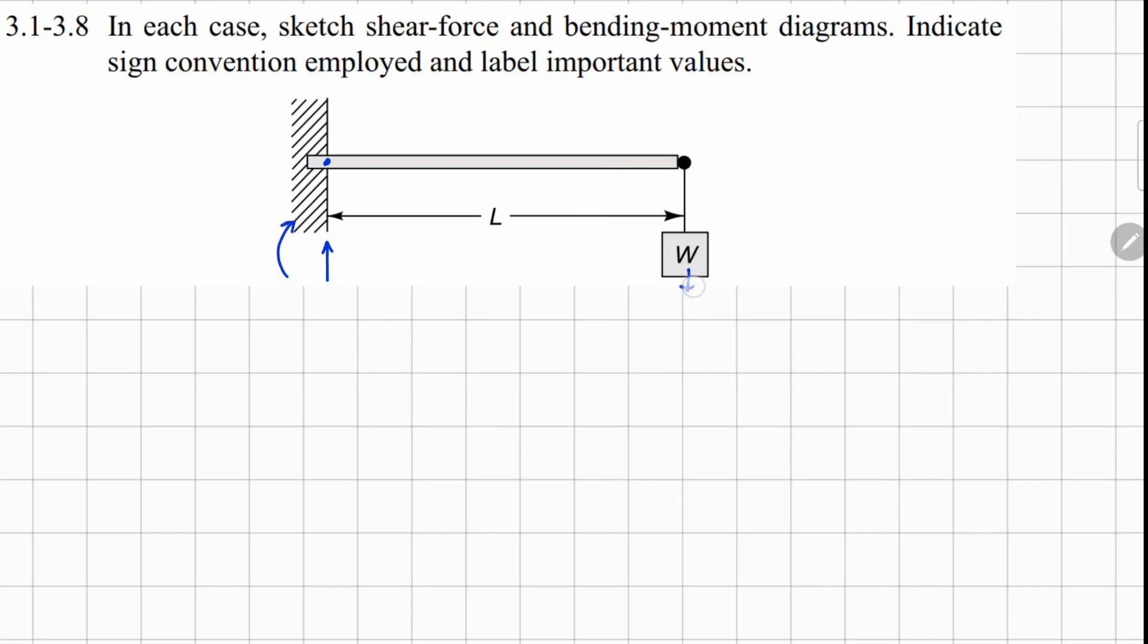There's a weight acting downwards here. Your reaction here is going to be W. During the moment balance, we can find out this value of moment is going to be minus WL.